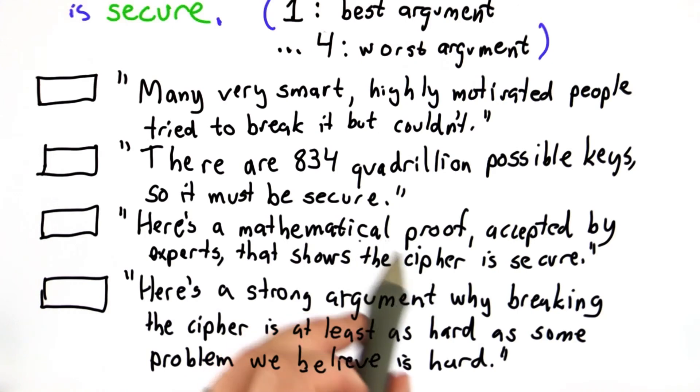The third choice: here's a mathematical proof that's been accepted by experts that shows the cipher is secure. The fourth choice: here's a strong argument why breaking the cipher is at least as hard as some problem we already believe is hard.